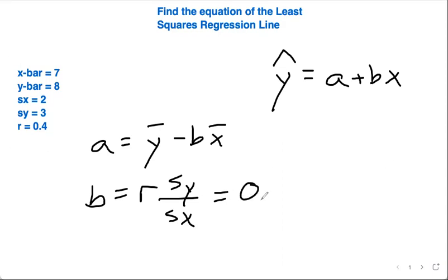So in the context of the information given, r here is 0.4 times the standard deviation of y, which is 3, over the standard deviation of x, which is 2. So break out your calculator if you need to. 0.4 times 3 divided by 2 will give you 0.6.